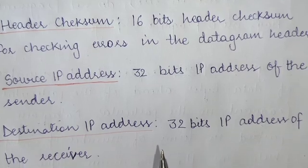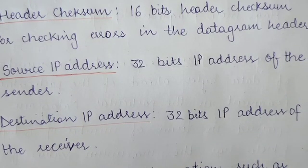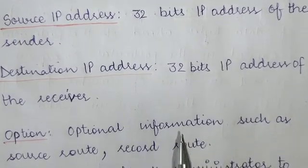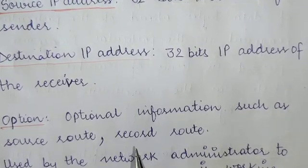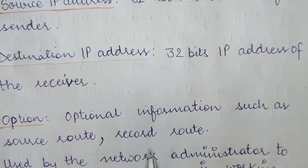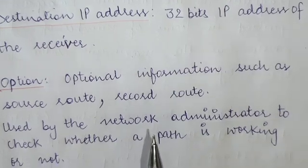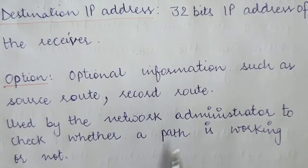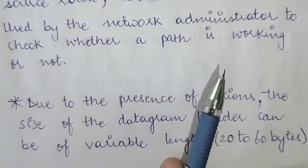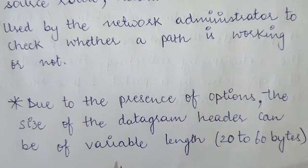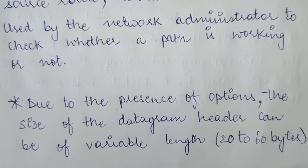The source IP address is 32 bits and represents the IP address of the source or sender. The destination IP address is also 32 bits and represents the IP address of the destination or receiver. The option field contains optional information such as the source route — the route through which the source transmits its fragments — and the record route, used by network administrators to check whether a path is working. Due to the presence of options, the datagram header can be of variable length, from 20 to 60 bytes.